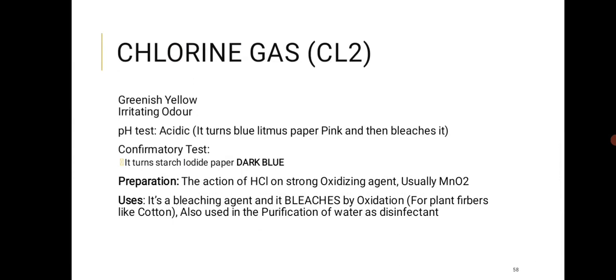Chlorine gas (Cl2) is greenish-yellow with an irritating, unpleasant odor. It is acidic. Confirmatory test: it bleaches damp litmus paper and turns starch-iodide paper dark blue. It is a bleaching agent. Chlorine is prepared by the action of HCl on MnO2 (a strong oxidizing agent): HCl + MnO2 → MnCl2 + Cl2 + H2O. MnO2 acts as an oxidizing agent here.